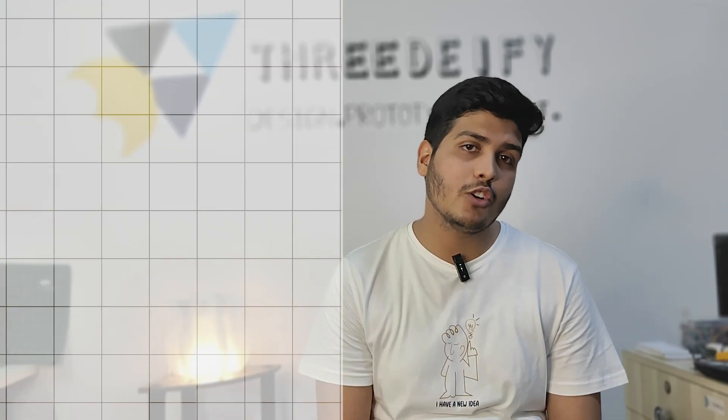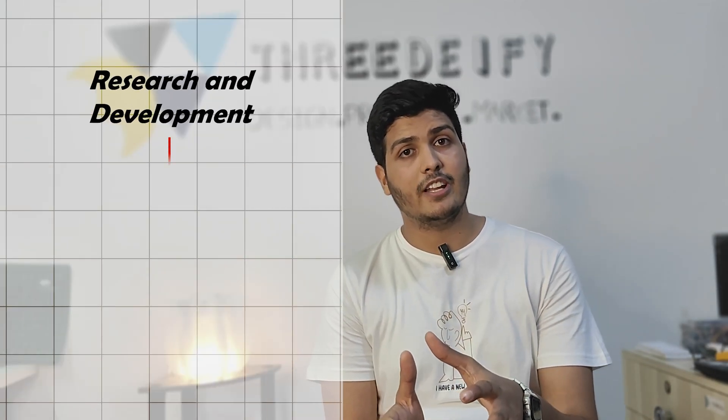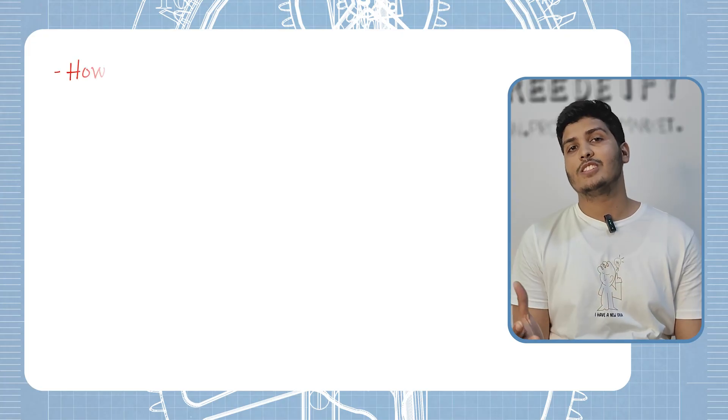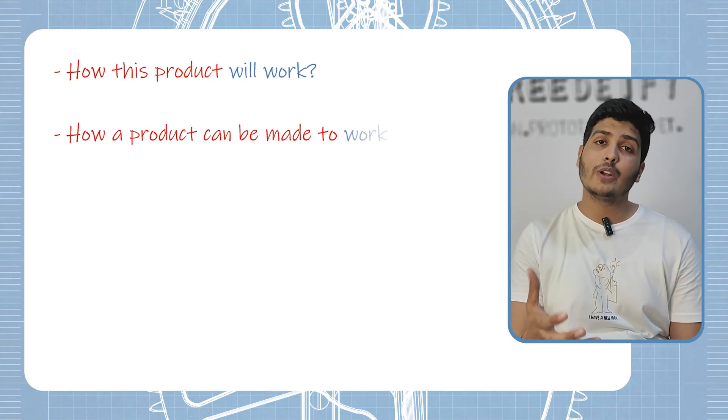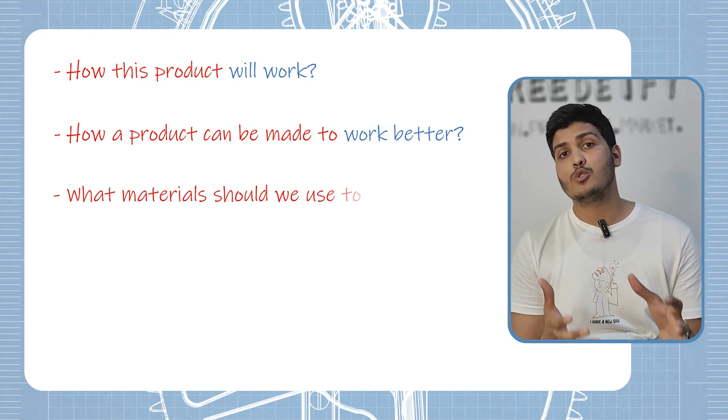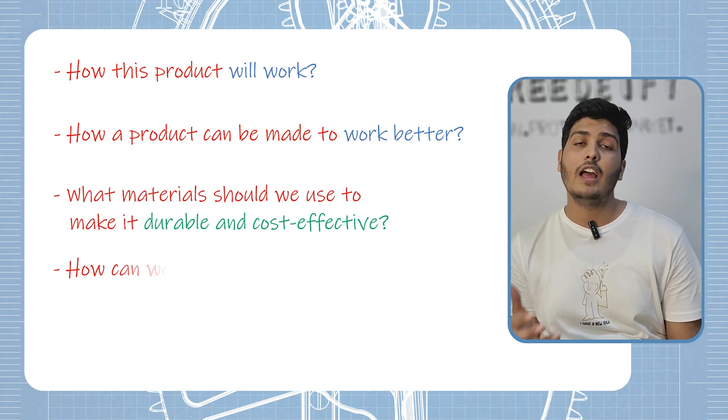Basically, a mechanical engineer applies the principles of physics and material science to ensure that a product functions both efficiently and safely. They are involved in every stage of the product life cycle, from research and development to design and manufacturing. In product design, a mechanical engineer plays a crucial role in translating ideas into functional and manufacturable products. We ask questions like: how will this product work, how can it be made better, what materials should be used to make it cost-effective and durable?